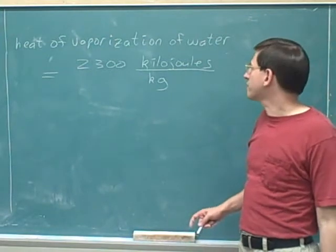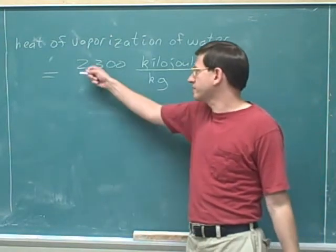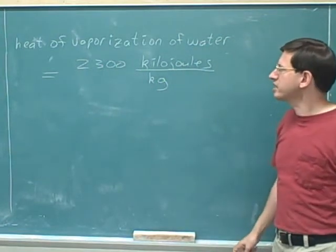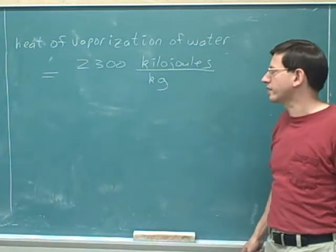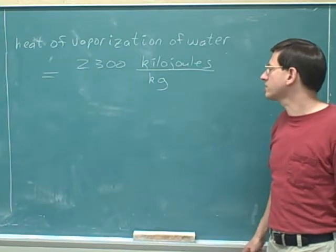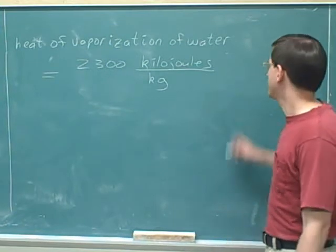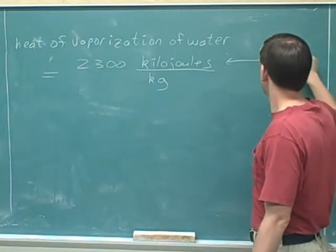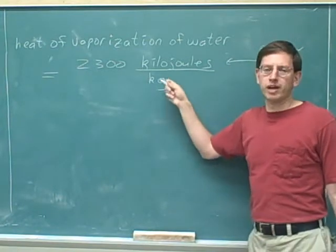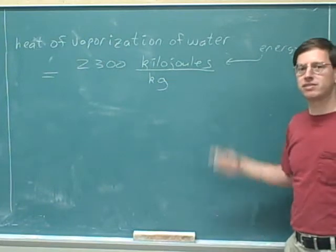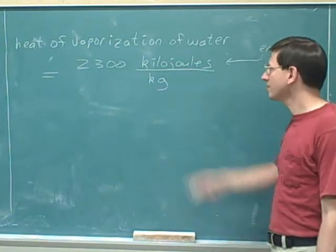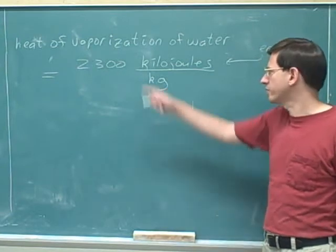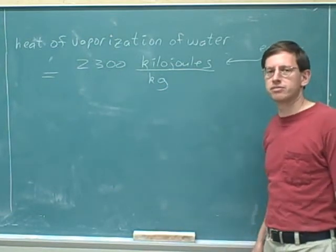The heat of vaporization of water is approximately 2,300 kilojoules per kilogram. Joules and kilojoules are measures of energy, and grams and kilograms are a measure of mass. Let's try to interpret what this means — try to interpret what this 2,300 number tells us.